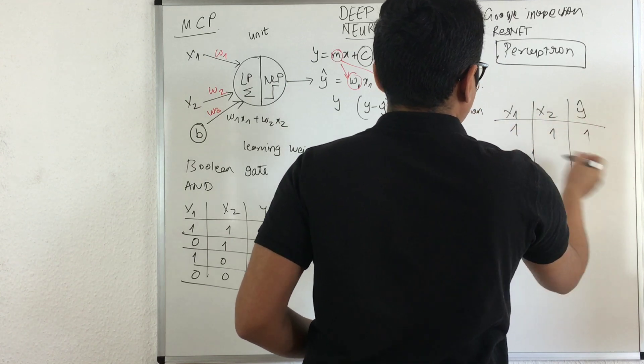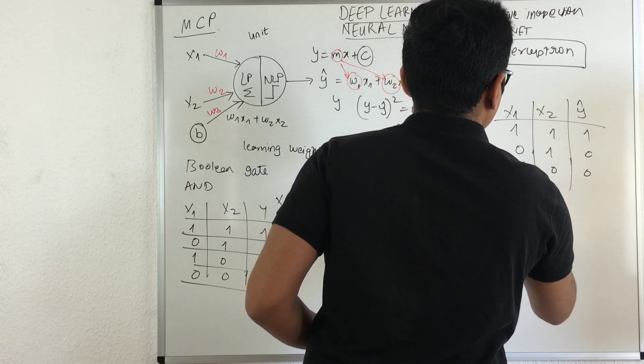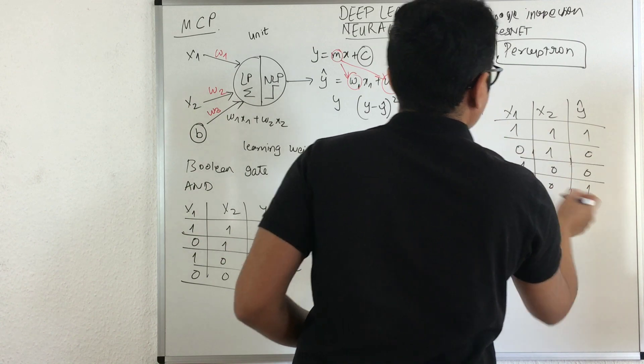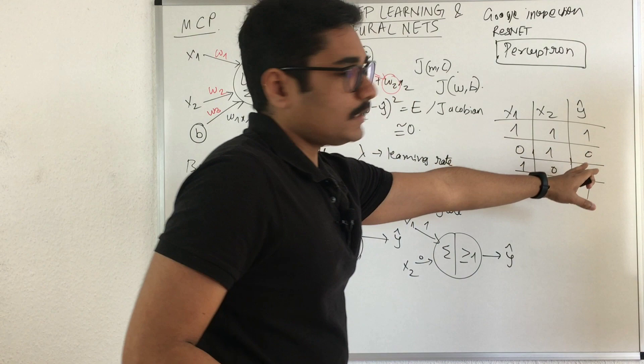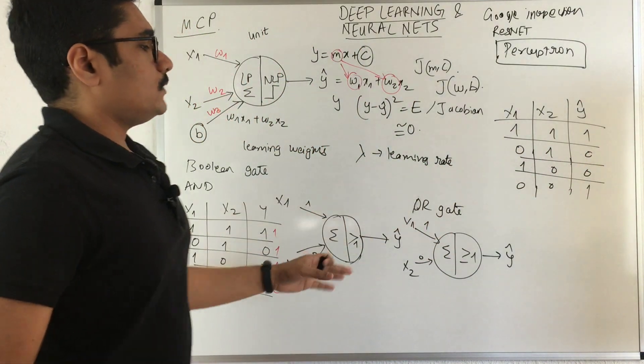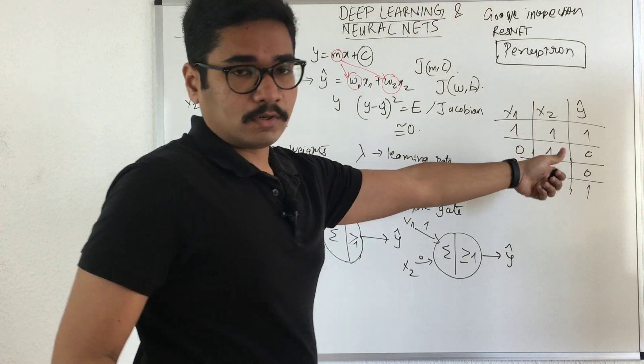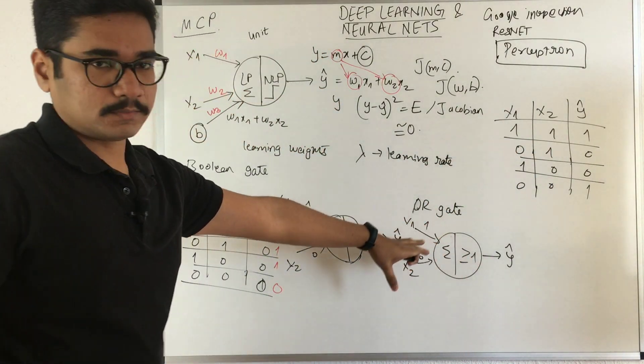In the XOR gate, if both inputs are 1 then it is 0. If it is 0 and 0 then it is 0. Else it is 1. If both symbols are different then you trigger 1, else you trigger 0. They could not implement this particular functionality in this kind of perceptron.